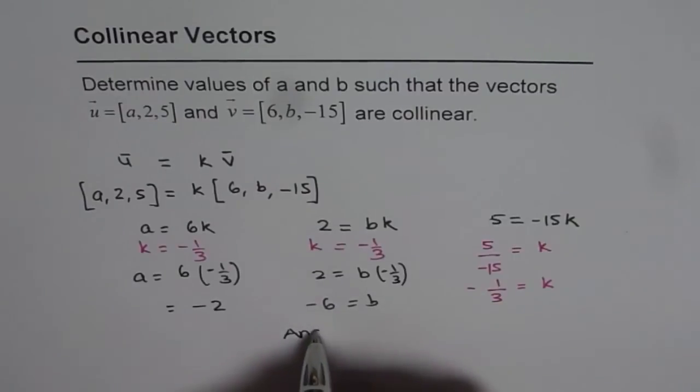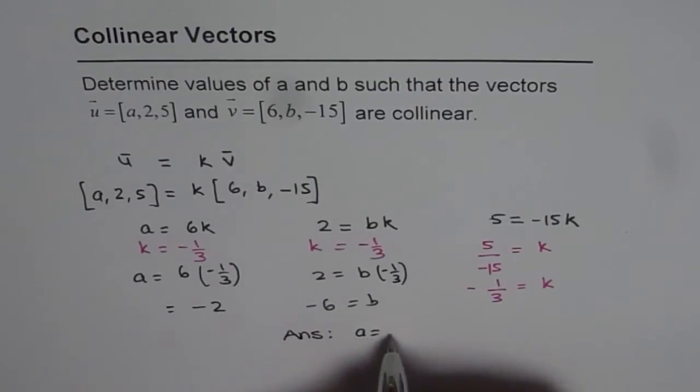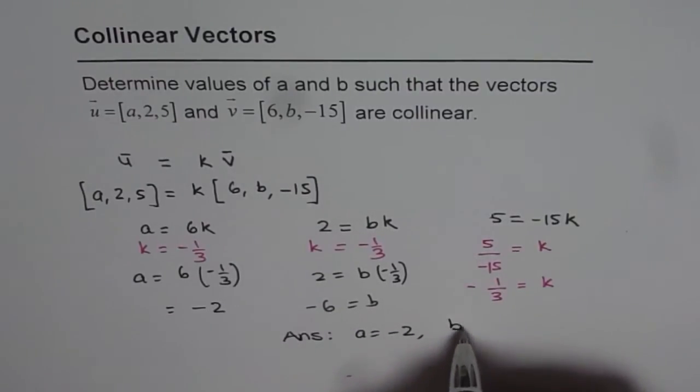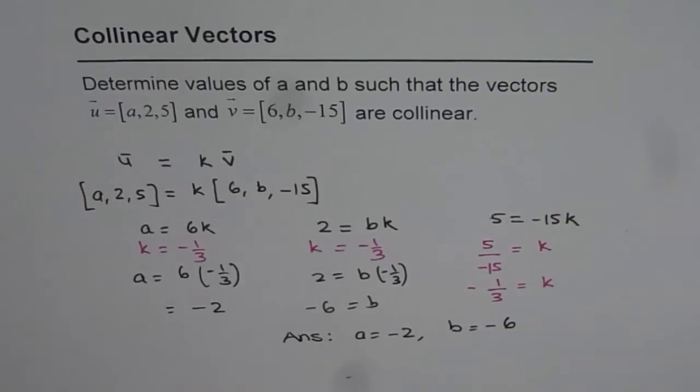So we get our answer, and the answer is a equals -2 and b equals -6. So that is how these questions can be solved. I hope that helps. Thank you.